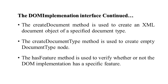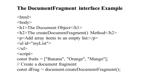The DOM implementation interface provides methods for operations independent of a particular document object model instance, such as createDocument, createDocumentType, and hasFeature. createDocument is used to create an XML document object and specify its document type. createDocumentType is used to create an empty document type node. hasFeature is used to verify whether the DOM implementation has a specific feature. For example, creating an unordered list with items like banana, orange, and mango.